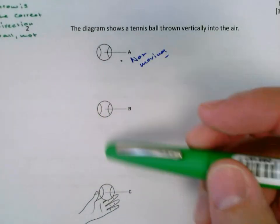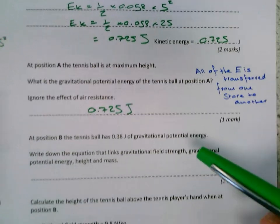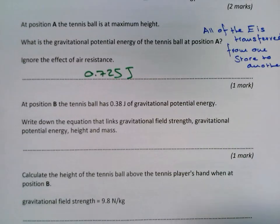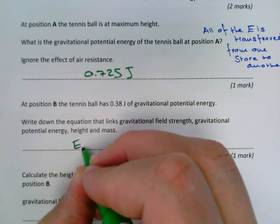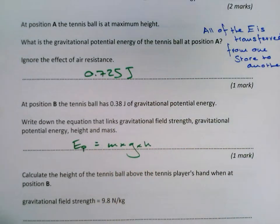At position B, this position here, so kind of two-thirds of the way up. So the tennis ball has 0.38 joules of gravitational potential energy. It wants to know the equation which links them. It's MGH. Quite an easy one to remember. Mass, gravitational field strength, and height.